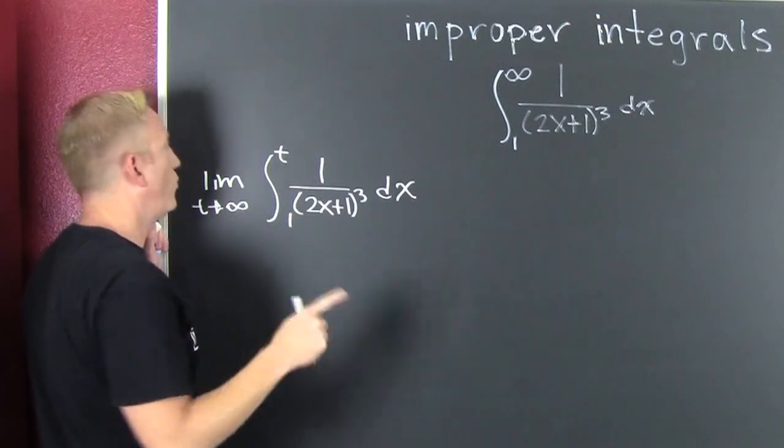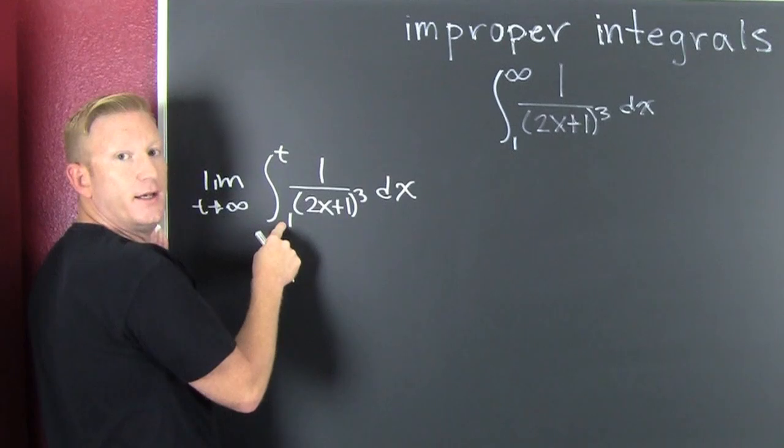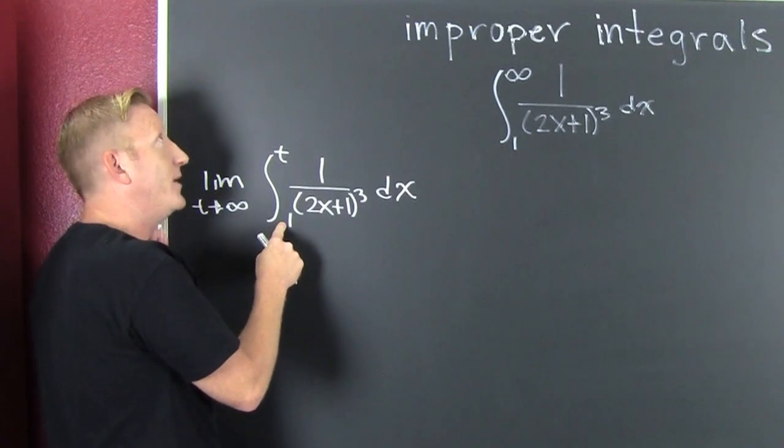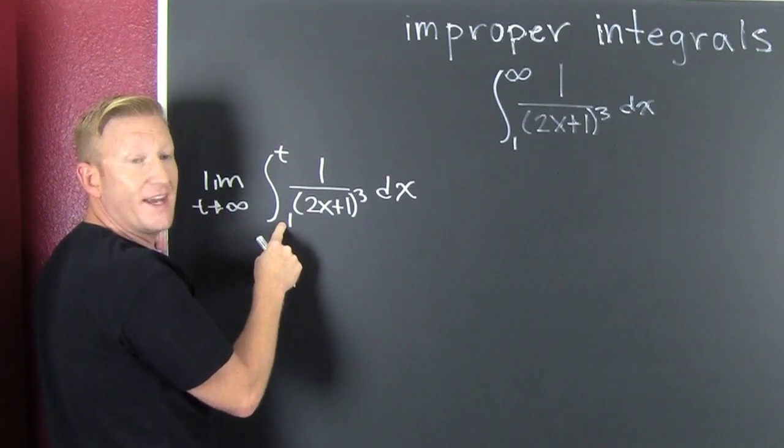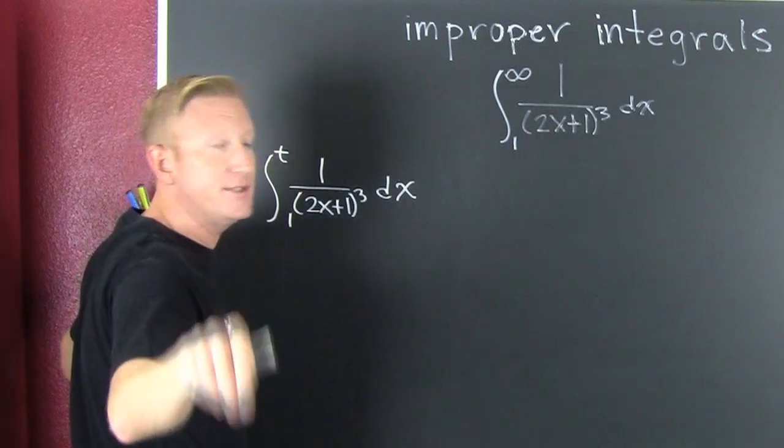So what did we do? Well, we made this integral evaluatable by the fundamental theorem of calculus. Then we're going to run the limit as T goes to infinity after we do the integration.